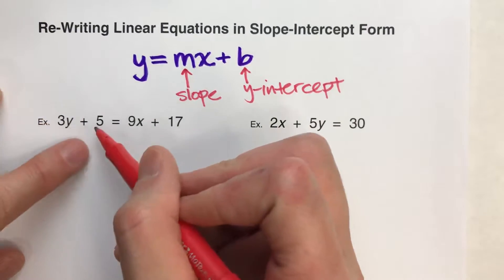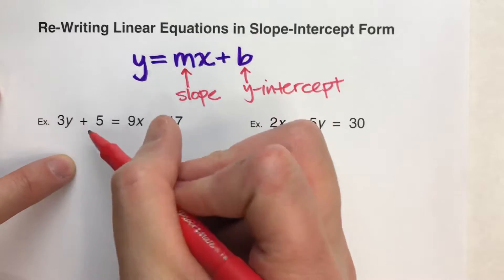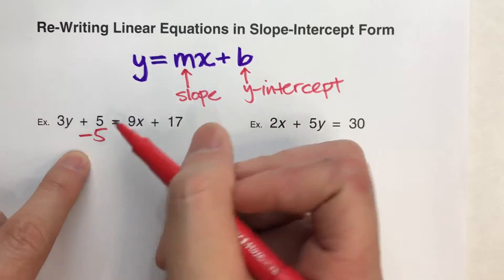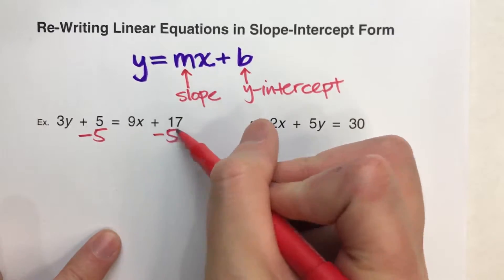We've got 3y plus 5. We need to undo this plus 5, so I'm going to subtract 5. But what I do to one side of the equal sign, I have to do to the other.